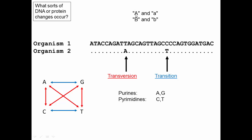So these alleles — capital A, lowercase a, capital B, lowercase b — let's look at a couple of individuals here. If this individual is the same but at this site they have an adenine instead of a thymine, adenine is a purine and thymine is a pyrimidine. So this mutation in this individual is termed a transversion.